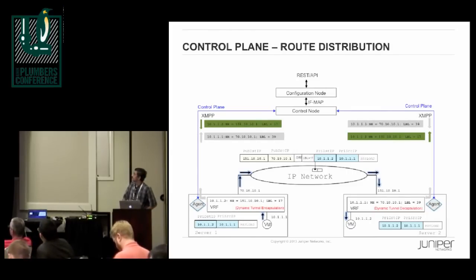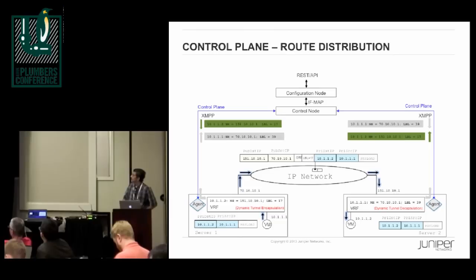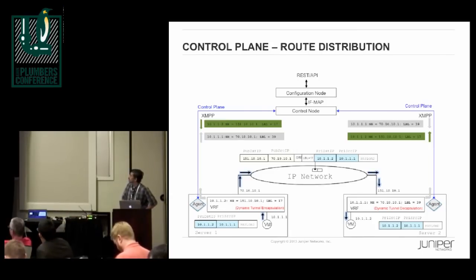Before we get to the kernel module, here is a brief description of the control plane. In this picture, we have two servers with a virtual machine being spawned on each one. When a VM is spawned, the agent running on that server advertises that VM to the control node — along with the address of the server and the label associated with that VM. Similarly, the VM spawned on server two is advertised to the control node. This information is exchanged between control nodes and then sent to all compute nodes in the same virtual network. If VM one wants to send a packet to VM two, the packet is encapsulated using a GRE header and MPLS header, plus the outer headers containing the source and destination addresses of the servers themselves.